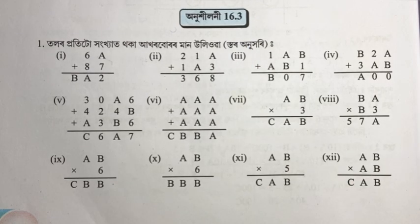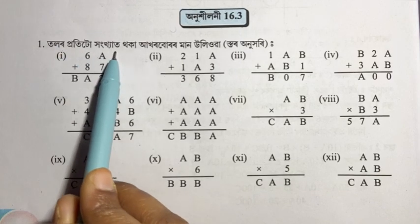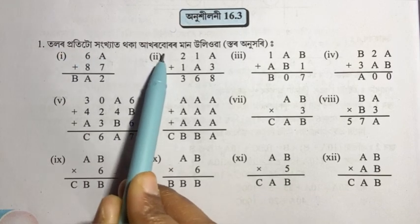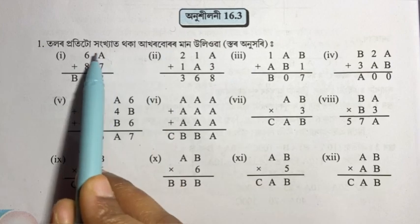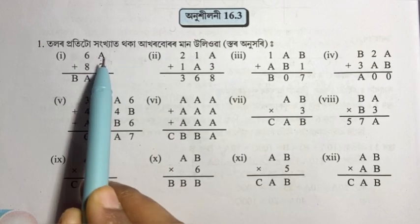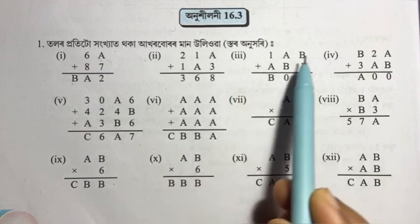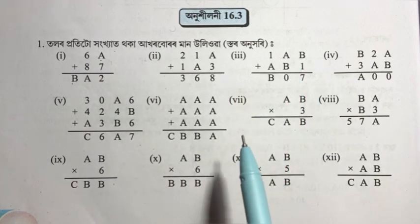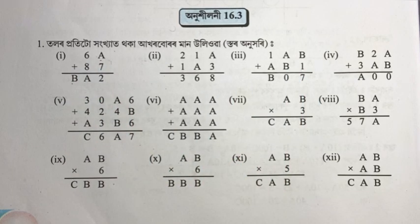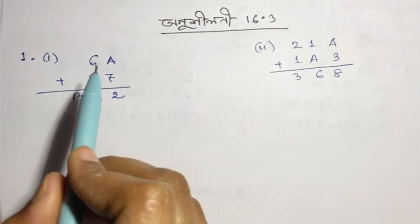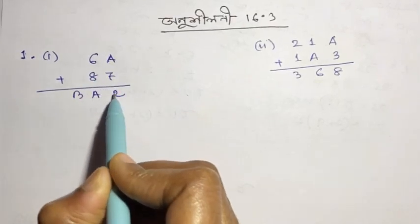I am going to ask you a question. A plus 7 is 2.